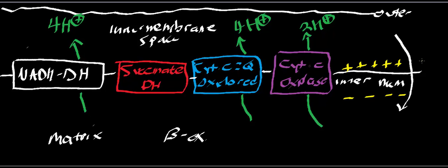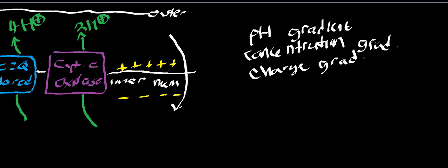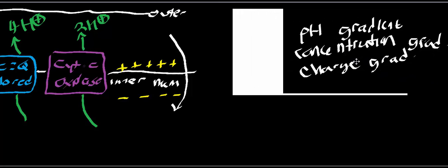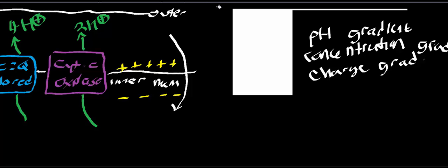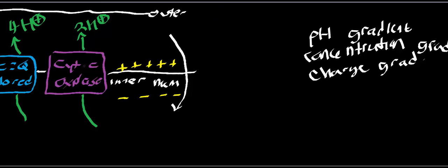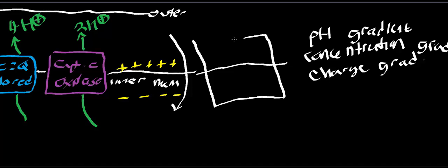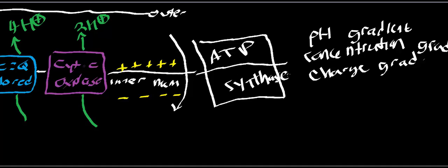It turns out there is a protein that these protons can move through to get back into the matrix. That protein is called ATP synthase. We're not going to go into excruciating detail right now, but all these protons that get pumped into the inner membrane space — driven by pH, concentration, and charge gradients — have a propensity to run through ATP synthase and move back into the matrix.